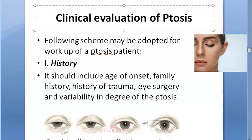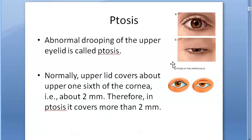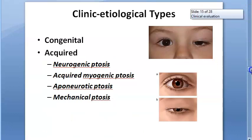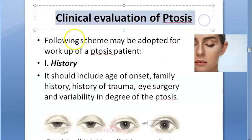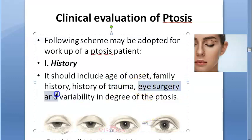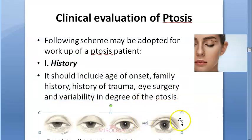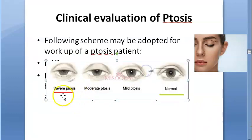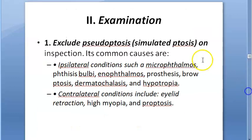In this video we want to look at clinical evaluation of ptosis. We have already gone through what ptosis is and the types — congenital, acquired, etc. For clinical evaluation, first you will take history: onset (whether it is congenital or acquired), familial history, whether there was trauma (muscle or aponeurosis trauma), or eye surgery (which could have weakened the aponeurosis). The image here shows severe, moderate, mild ptosis, and normal.